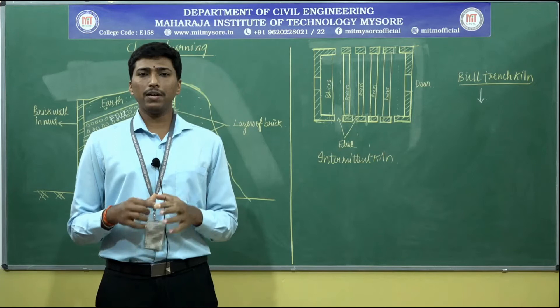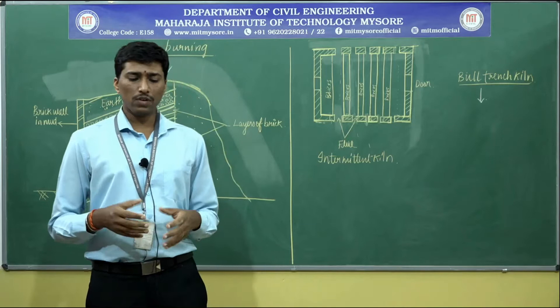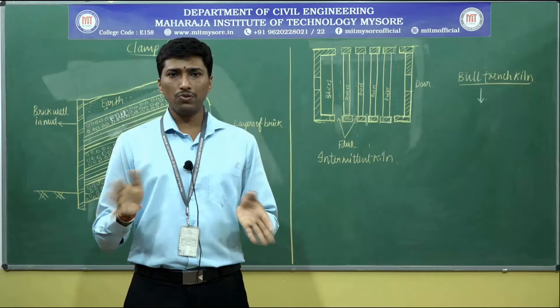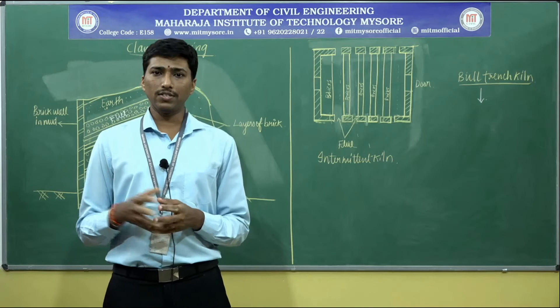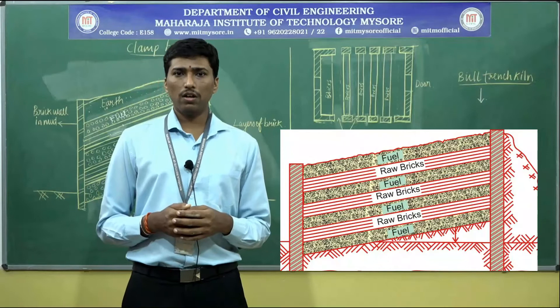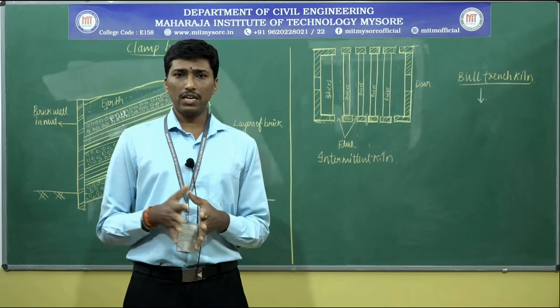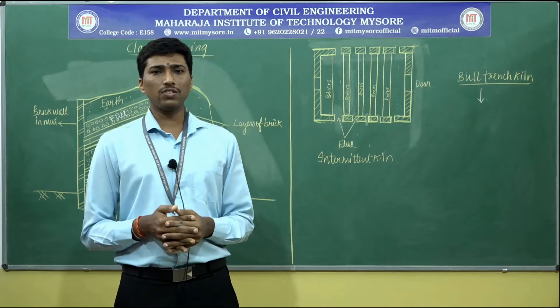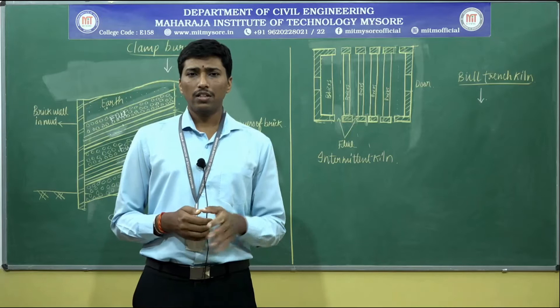There are two types of burning systems: burning through clamps and burning through kilns. In clamp burning, bricks are stacked in an open medium, closed on top, and fed with fuel layers. Fuel materials include dried or decayed wood, logs, leaves, cotton waste, or any low-cost available materials. In kilns, logs of wood along with fuel are also utilized.